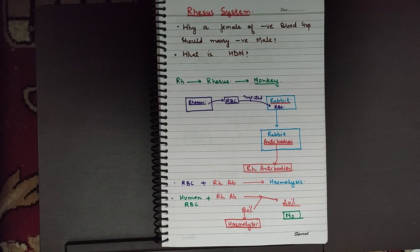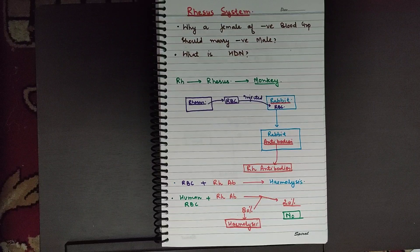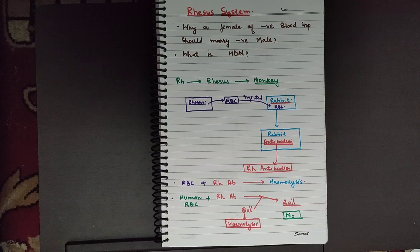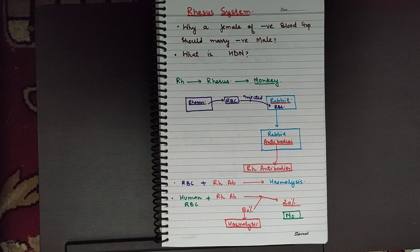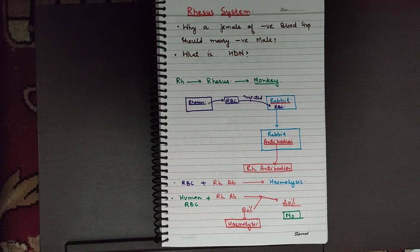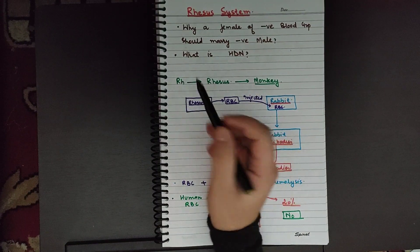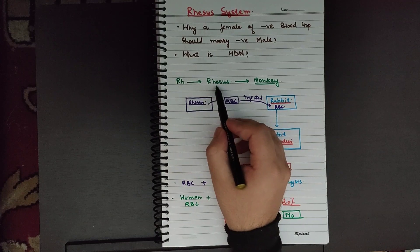What is the RH system? Why should a female of negative blood group marry a male with negative blood group and not a male with positive blood group? What is hemolytic disease of newborn? We are going to discuss in today's video. Hello students, I am Dr. Faisal and you are watching Biocean Classes. Let's get started. The RH system — the word RH stands for Rhesus.